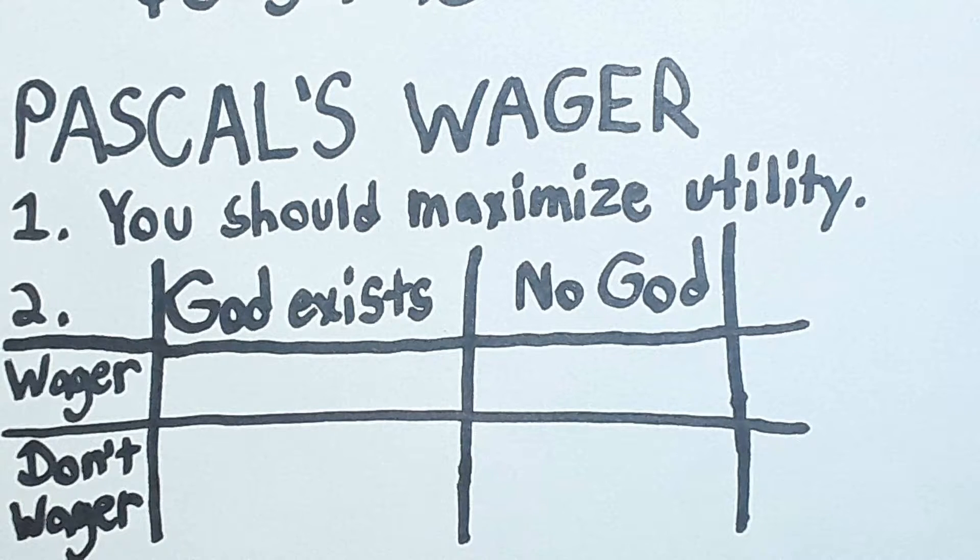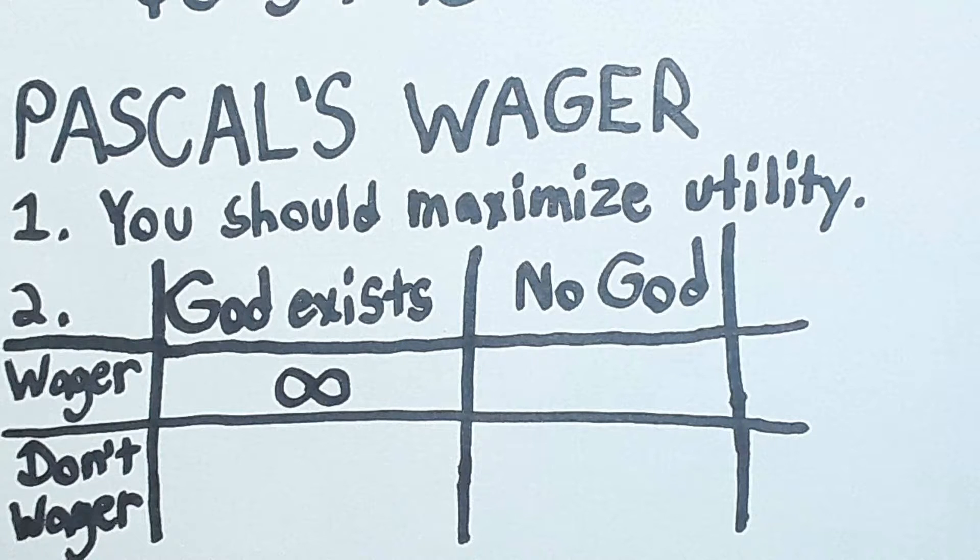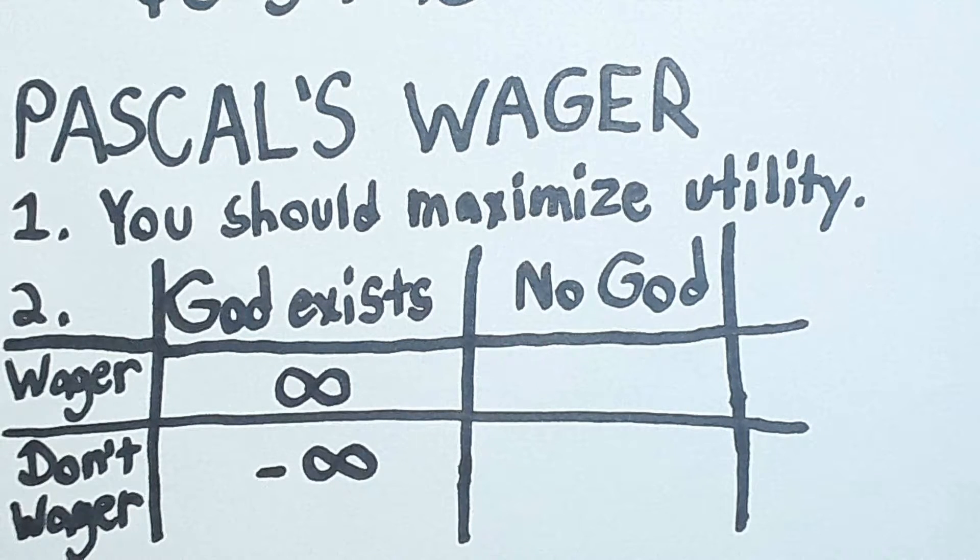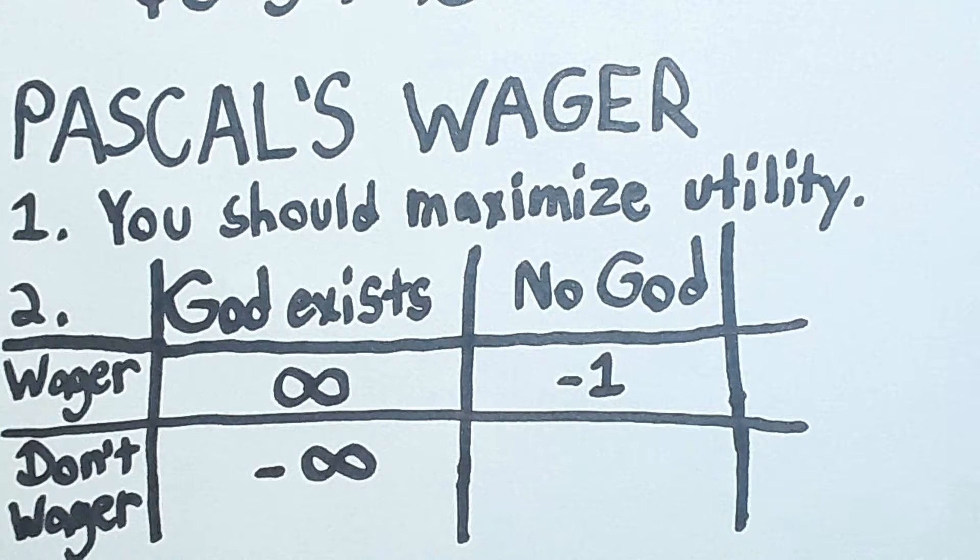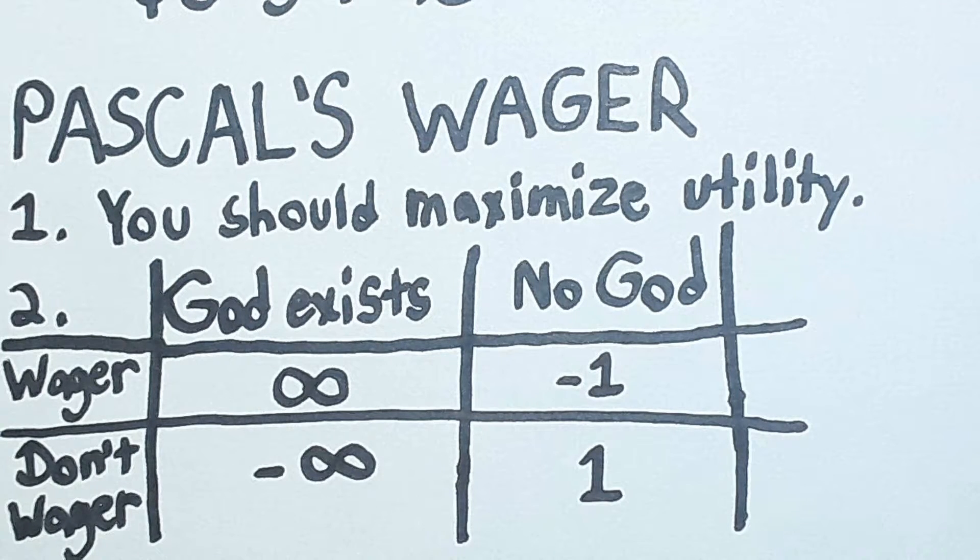If God exists, then wagering on God will lead to the infinite utility of going to heaven, and not wagering on God will be equal to the negative infinity utility of going to hell. If there is no God, then wagering on God causes you to miss out on finite utility because serving God on earth is hard, and if you didn't wager on God, you get the finite utility of having lived however you want.